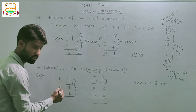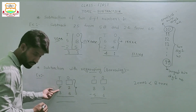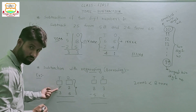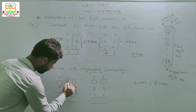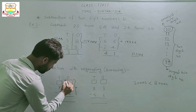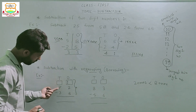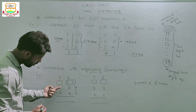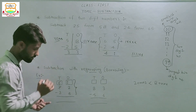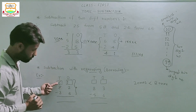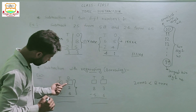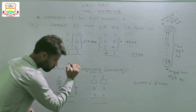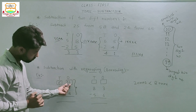So we take 1 ten from the tens column. 7 minus 1 equals 6 — write 6 in the tens box. Now write 2 in front of 1 in the ones column, making it 12. We need to understand this: 1 ten equals 10 ones.